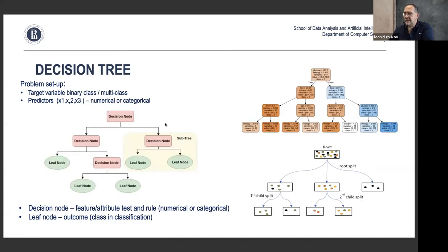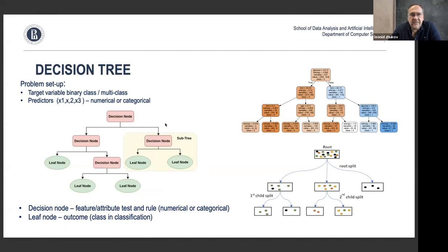The second approach is a decision tree — essentially the same trees as discussed previously in the regression lecture. Every node contains some information for making a decision. Internal nodes are decision nodes, and the leaf nodes hold a categorical outcome — the class of classification.